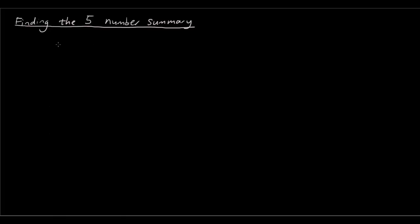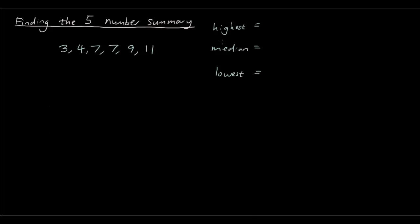So we need a set of data, so I'm just going to make up some numbers. Let's say three, four, seven, seven, nine, eleven. Now previously we've already learned how to find the median, and the median is one number that we need to find in our five number summary. Some of the other values we need to find are the highest number, the lowest number, the upper quartile, and the lower quartile. These five values are what we call the five number summary.